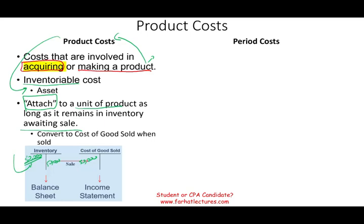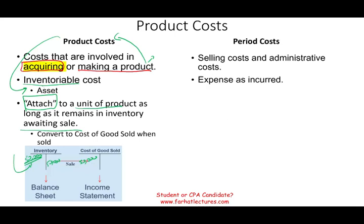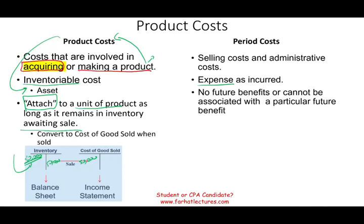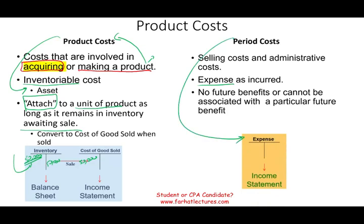Period costs are different. Period costs are selling costs and administrative costs. When a company incurs these costs, we don't consider them an asset — we consider them an expense and expense them on the income statement. We assume they don't provide any future benefit that we can associate with a particular product. Therefore, period costs are easy: every year you close your expenses, they go to zero. Think of period cost as expense — they go on the income statement, case is closed.